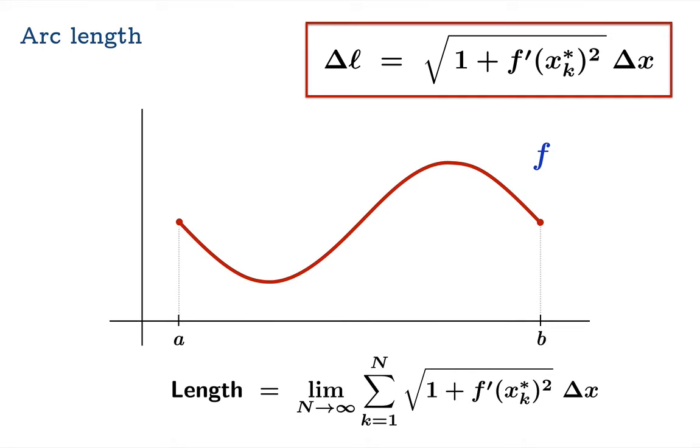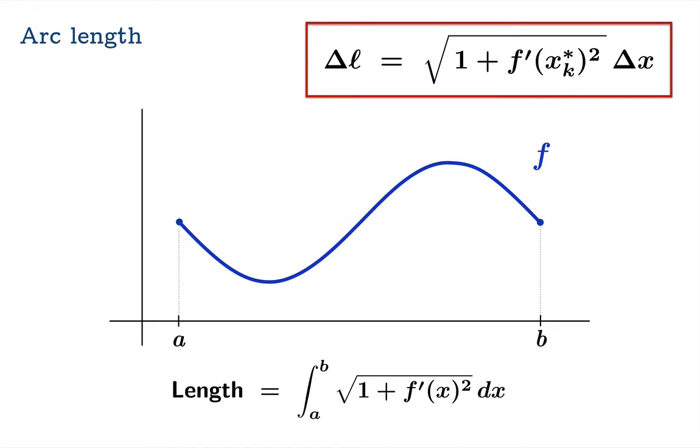So in fact, the arc length we're looking for is the limiting value as the number of subdivisions goes to infinity of this expression here. The integrand function that we should put inside of our integral is the square root of 1 plus f prime of x squared. This definite integral yields the arc length.